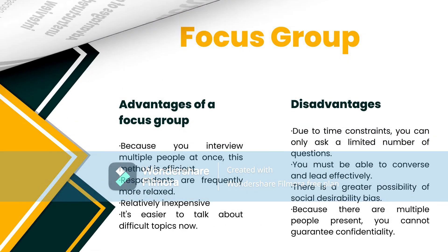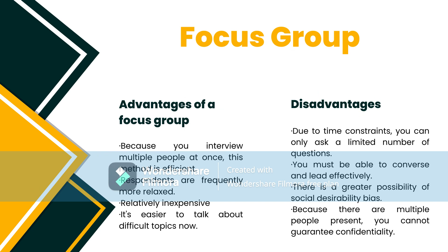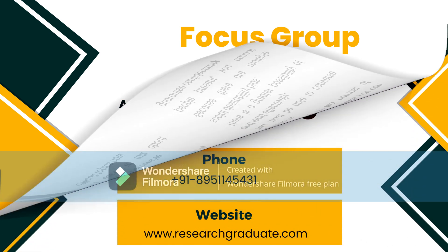Preparation takes a long time. Focus group advantages: because you interview multiple people at once, this method is efficient. Respondents are frequently more relaxed. It is relatively inexpensive and easier to talk about difficult topics. Disadvantages: due to time constraints, you can only ask a limited number of questions. You must be able to converse and lead effectively. There is a greater possibility of social desirability bias. Because there are multiple people present, you cannot guarantee confidentiality.